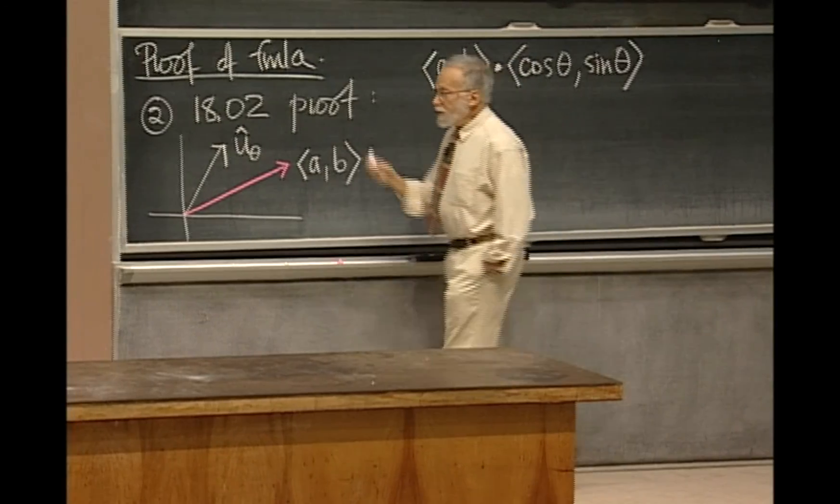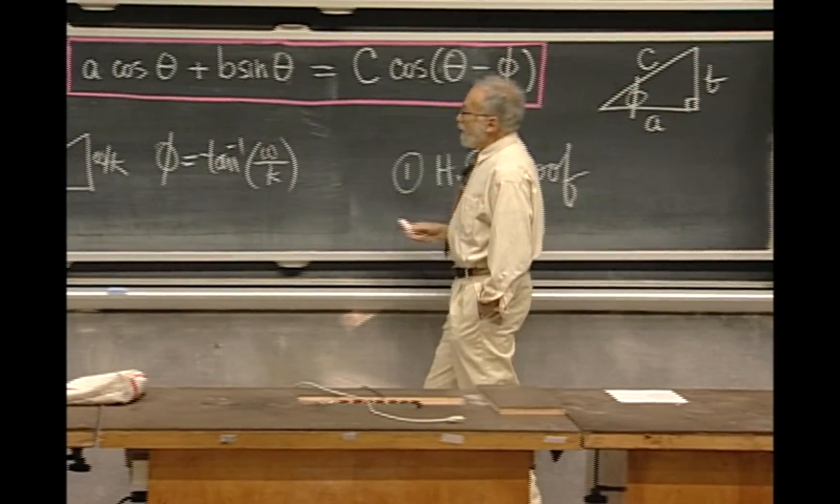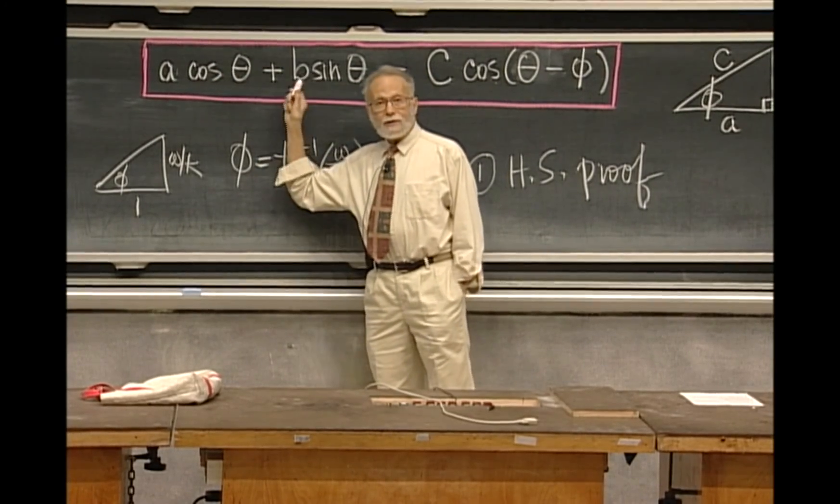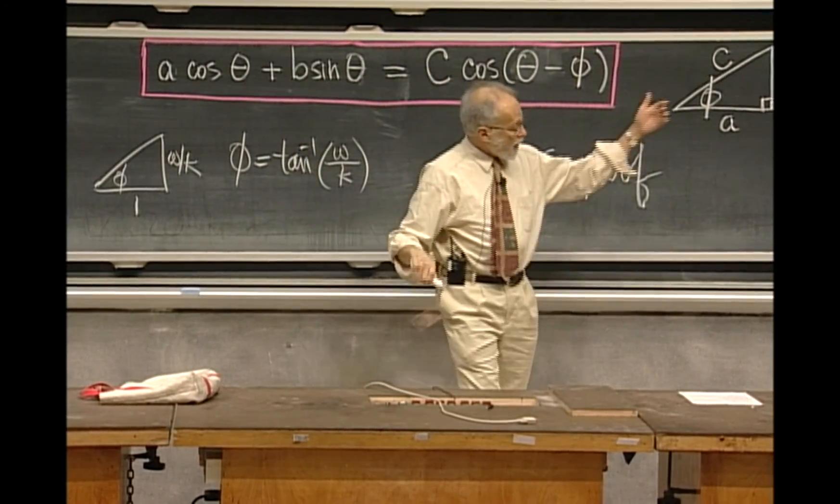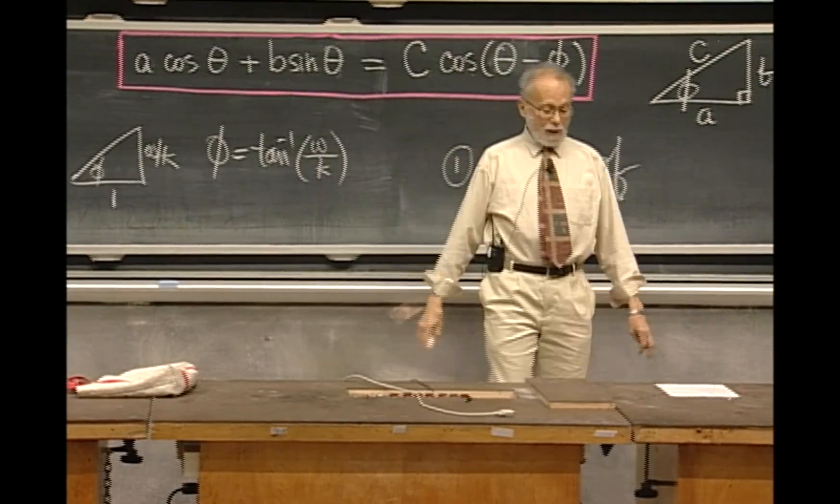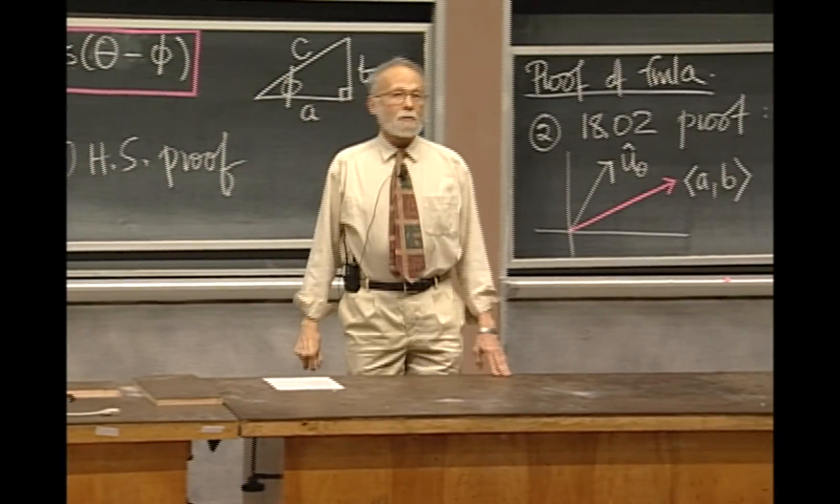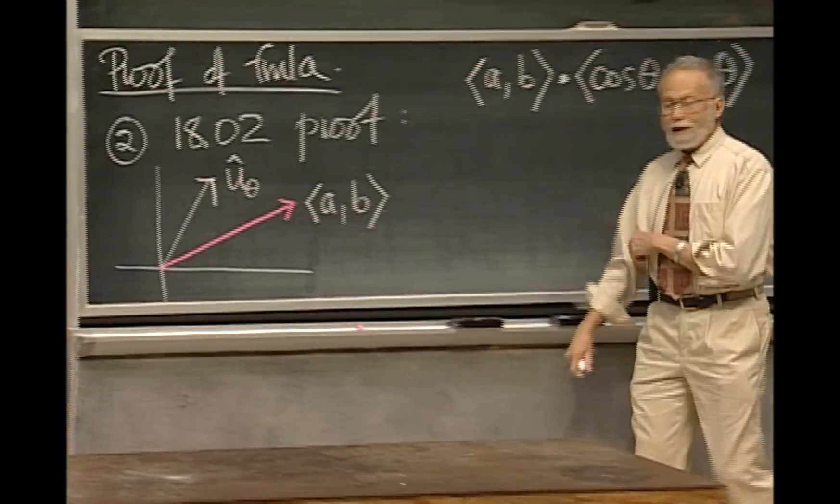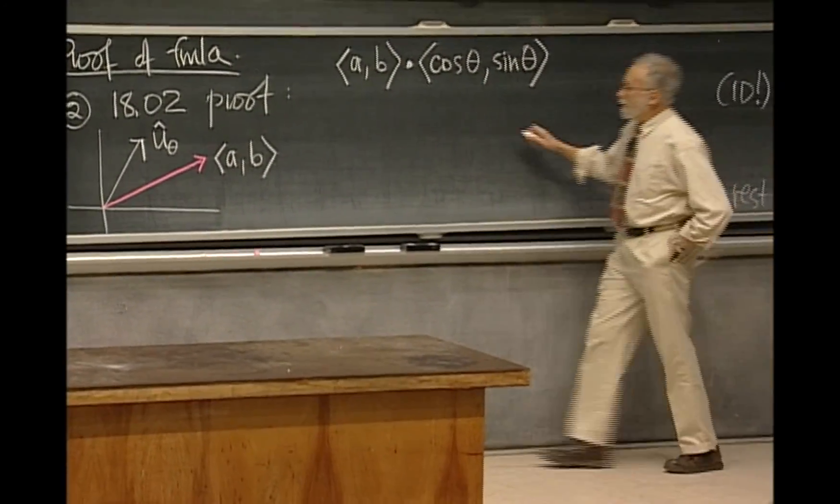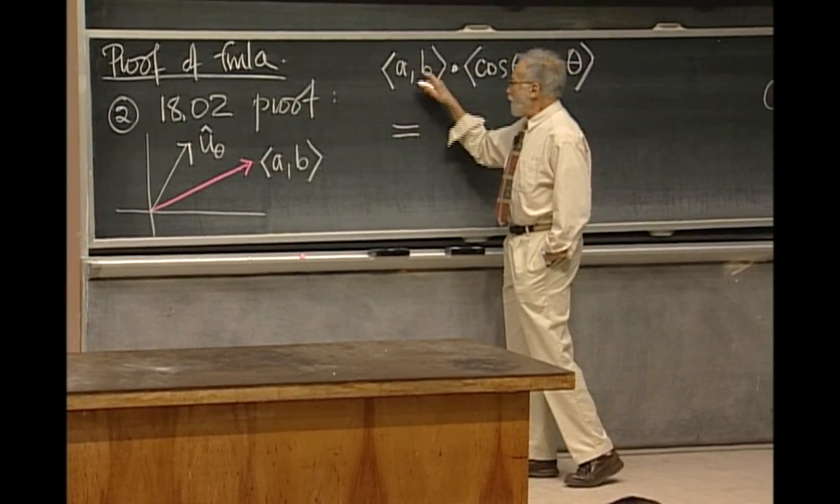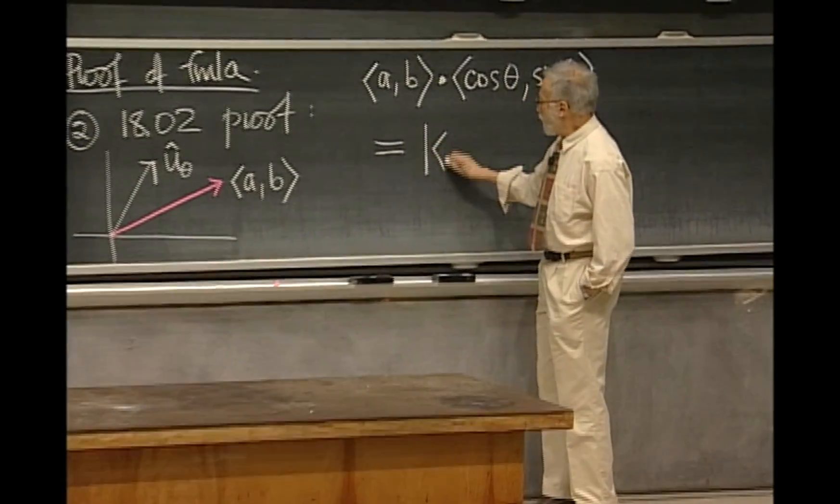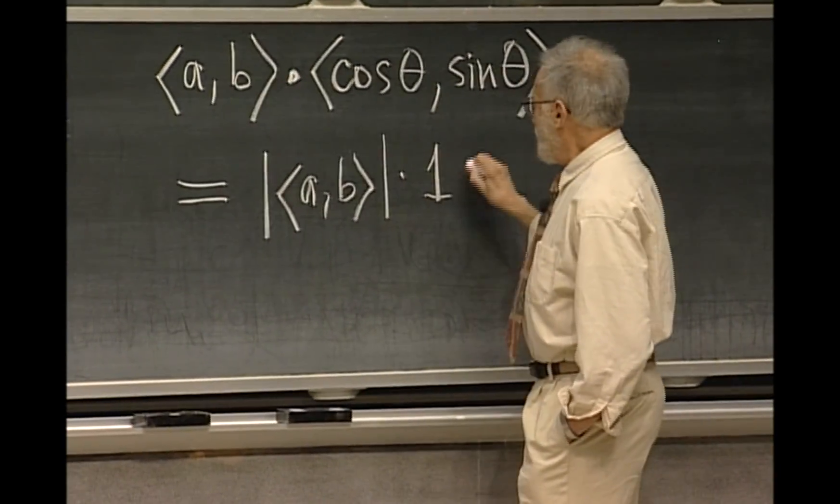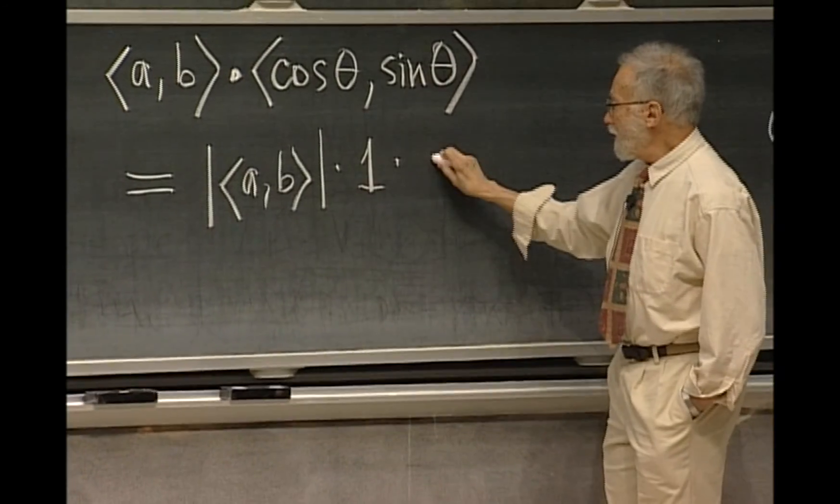Now, all this formula is, is saying that the scalar product, the dot product of those two vectors can be evaluated, if you know their components, by the left hand side of the formula. And if you don't know their components, it can be evaluated in another way, the geometric evaluation, which goes, what is it? It's the magnitude of one times the magnitude of the other times the cosine of the included angle.